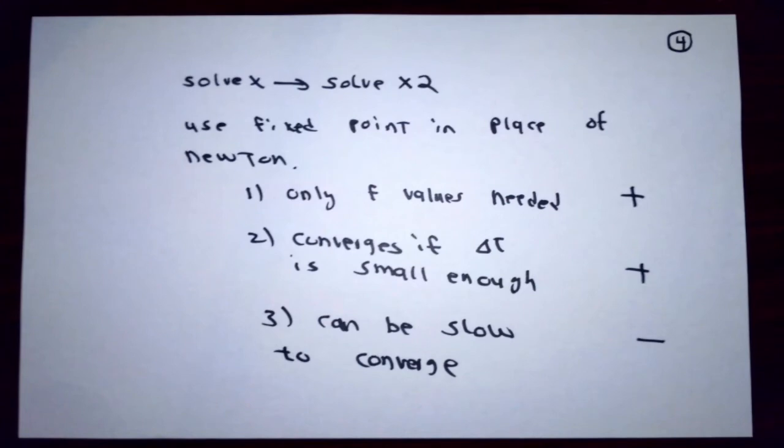So what I'm thinking of doing is making a copy of subroutine solve x. I'll call it solve x2 because it's the second version. Instead of doing Newton's method, solve x2 is going to implement this fixed point idea.